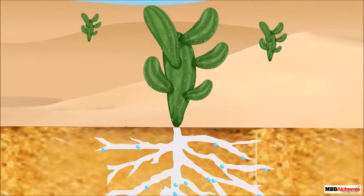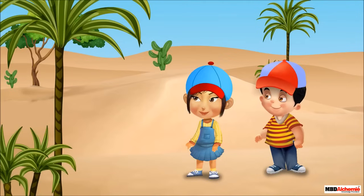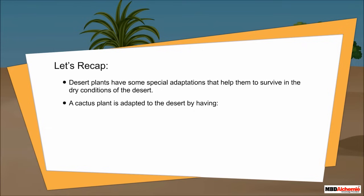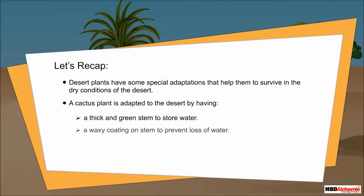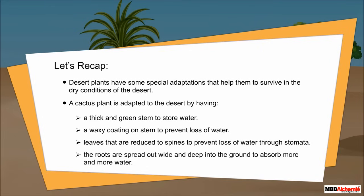With the help of all these adaptations, a cactus survives in deserts. In the same way, other desert plants are also adapted to the environment. Let's recap. Desert plants have some special adaptations that help them to survive in the dry conditions of the desert. A cactus plant is adapted to the desert by having: a thick and green stem to store water, a waxy coating on stem to prevent loss of water, leaves that are reduced to spines to prevent loss of water through stomata, and roots that are spread out wide and deep into the ground to absorb more and more water.